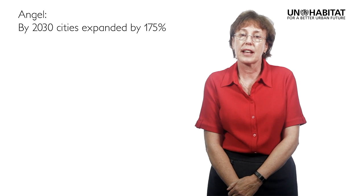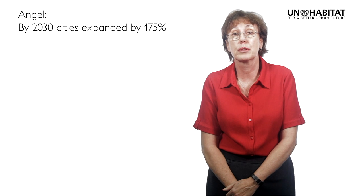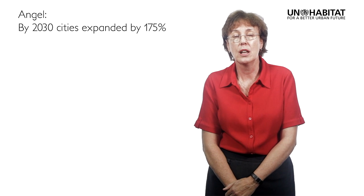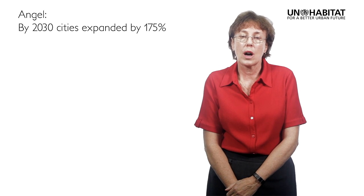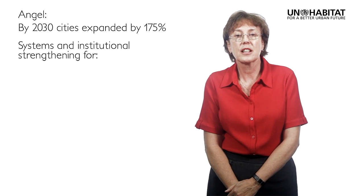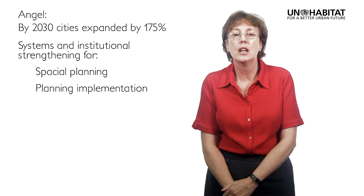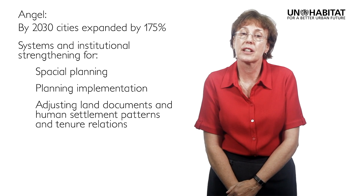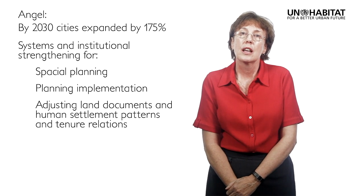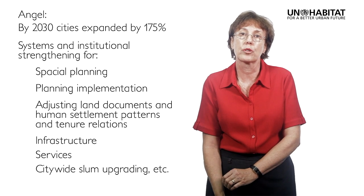Zooming in on Angel's thesis that cities are going to expand by 175% between now and 2030 — what does that really mean in terms of delivery? It's going to require systems and institutional strengthening for spatial planning, planning implementation, adjusting land documents, and human settlements and their tenure relationships. It's going to require massive infrastructure and service delivery and citywide slum upgrading.